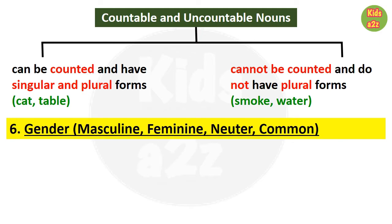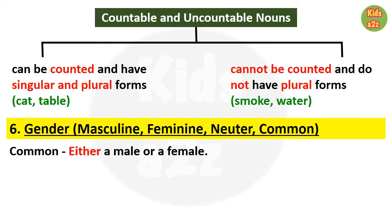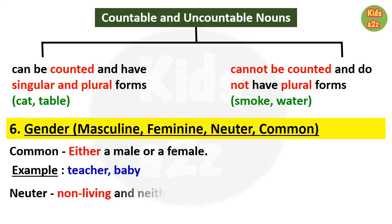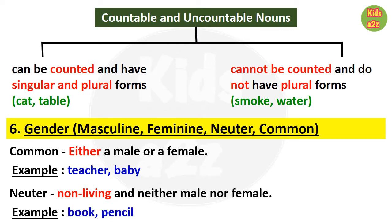The next topic is gender, including masculine, feminine, neuter, and common gender. There is already a video on gender in the channel — the link will be in the description box. Common gender means either a male or a female, like 'teacher' or 'baby.' Neuter gender means non-living things that are neither male nor female, like 'book,' 'pencil,' 'table,' or 'chair.'